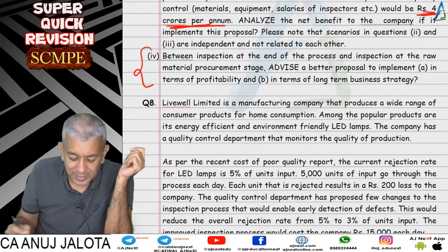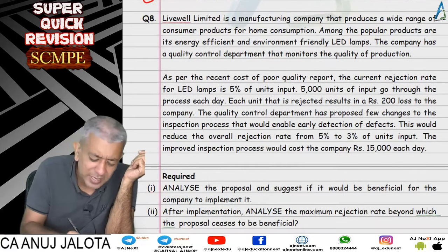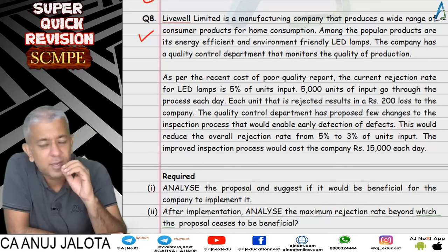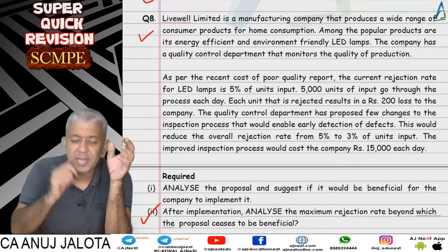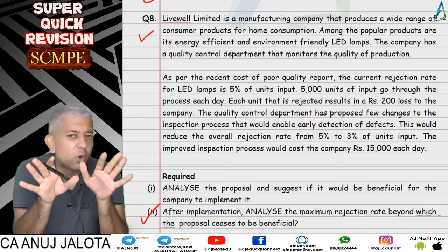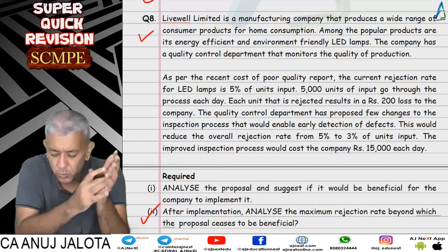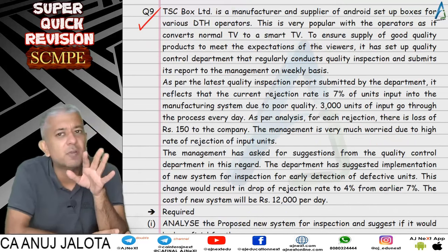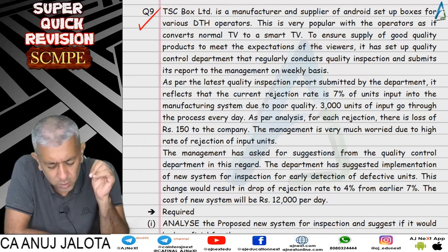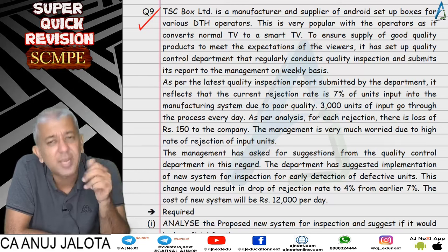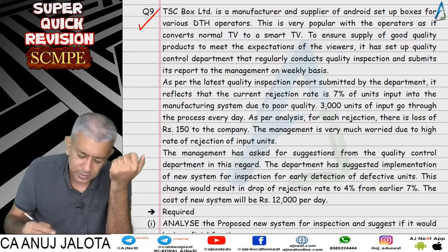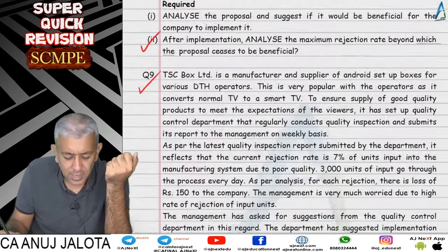Question 8 was one of the simplest — finishable in five minutes. There was a proposal to evaluate as good or bad: find the benefit in Part 1, and in Part 2 find the minimum rejection rate at which we are indifferent by forming an equation. Question 9 was similar to Question 8, kept as homework. Both are straightforward — attempt them and check answers on the website.